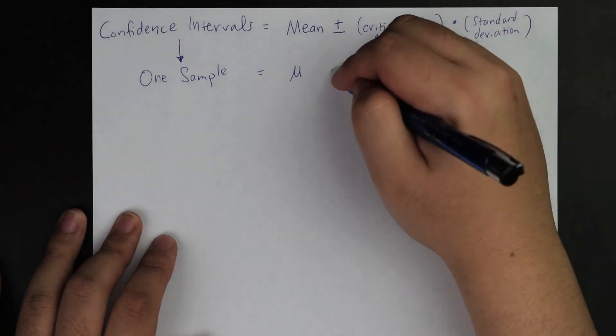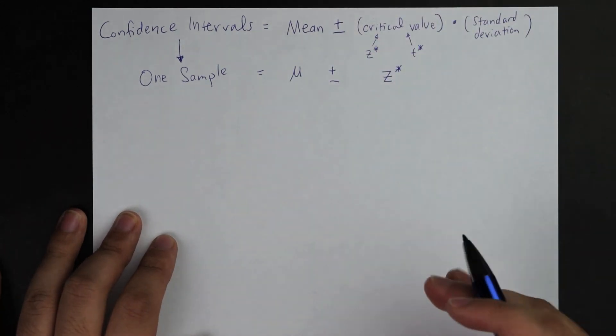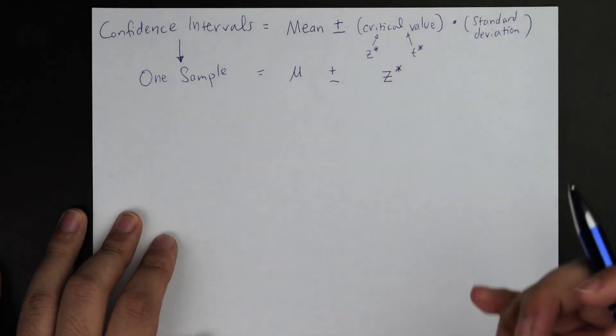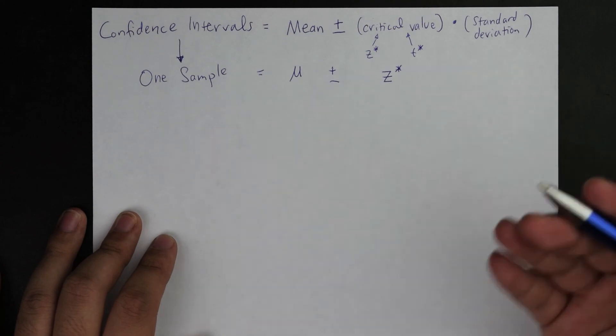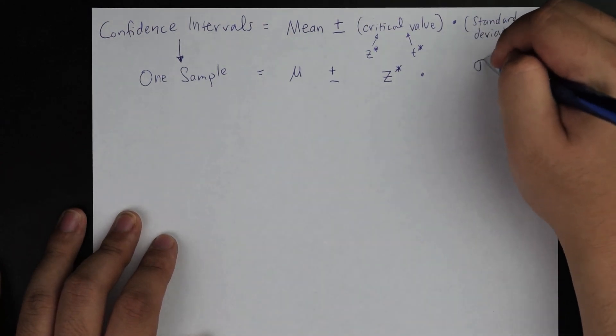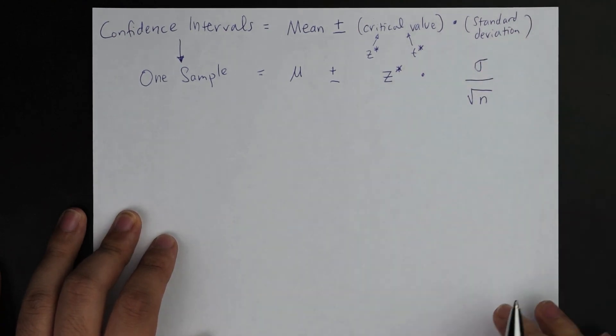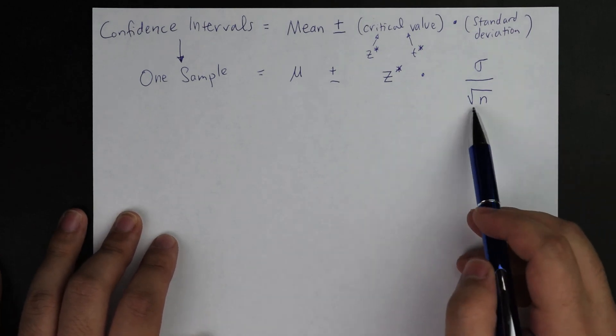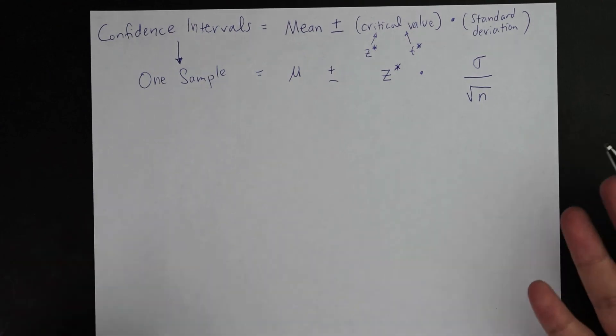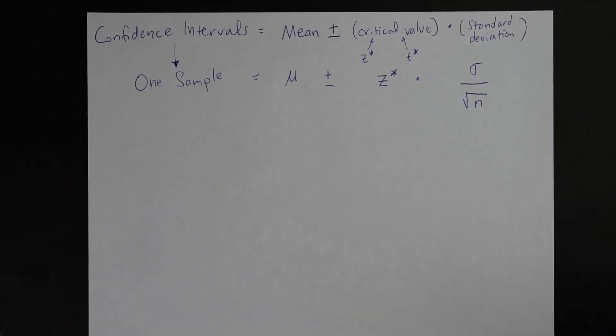For this example, I'm just going to use Z star. There's no reason specifically why. Just make sure you understand the conditions, which I will also explain in the future. So it will be Z star plus or minus the standard deviation. For this case, it's going to be the standard deviation of the population σ divided by square root n. A lot of these components are provided, and you need to understand that you can be flexible. Memorizing does help for the exam, though it doesn't mean it's 100% necessary.